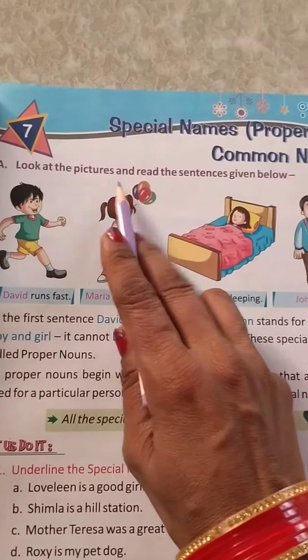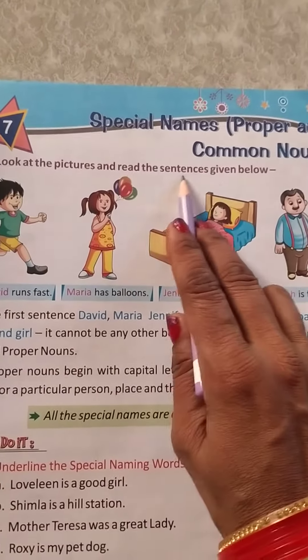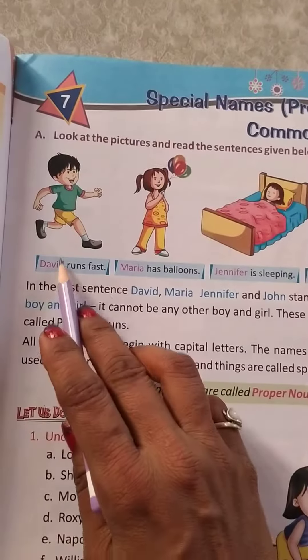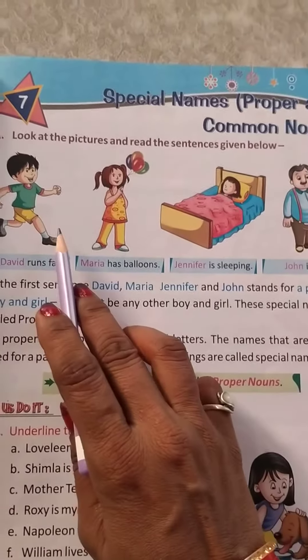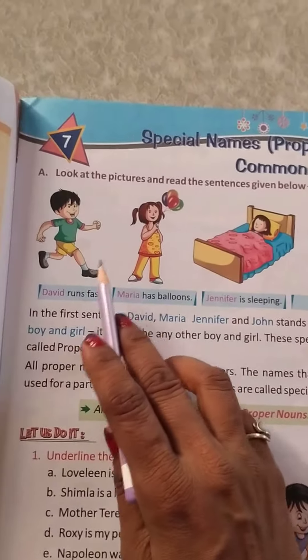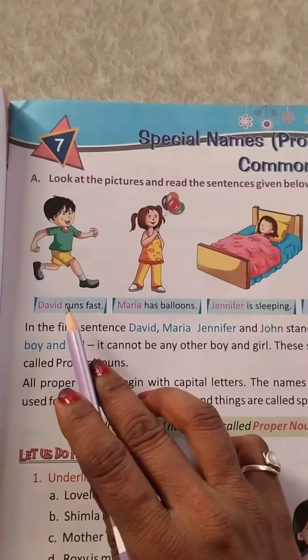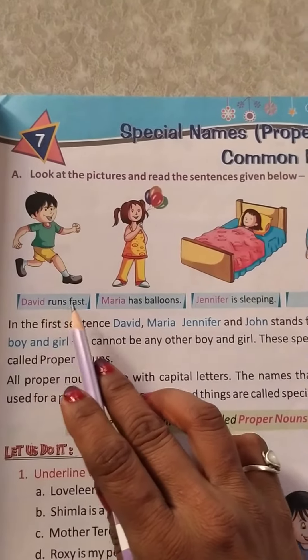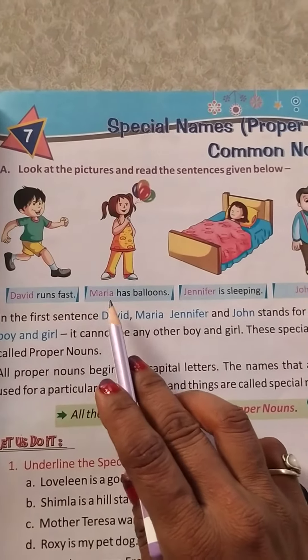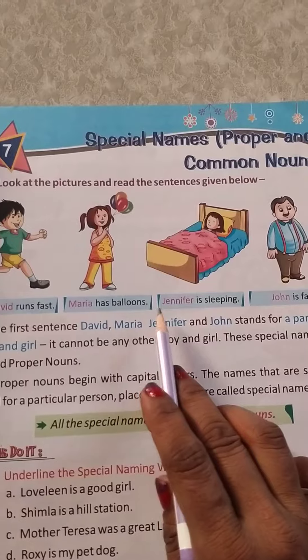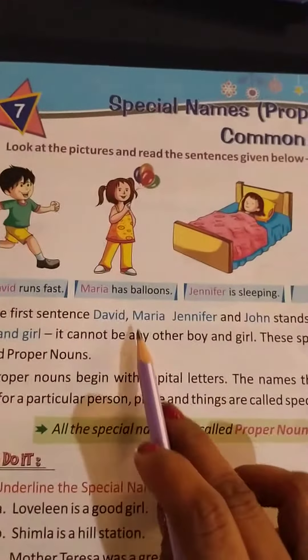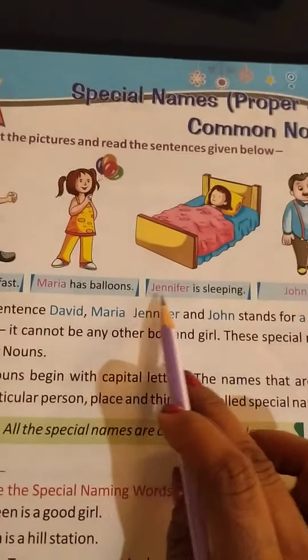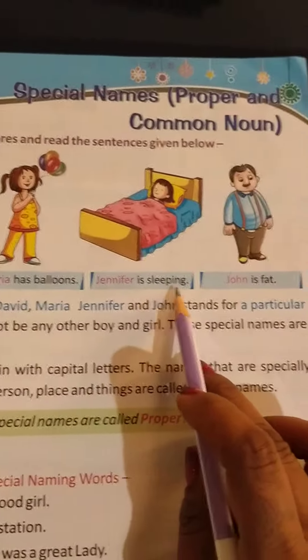Look at the pictures and read the sentences given below. Dekhiye students, yeh sentences dekhiye, inki pictures aur inhi ko read kijiye. David runs fast. Maria has balloons. Jennifer is sleeping. John is fat.